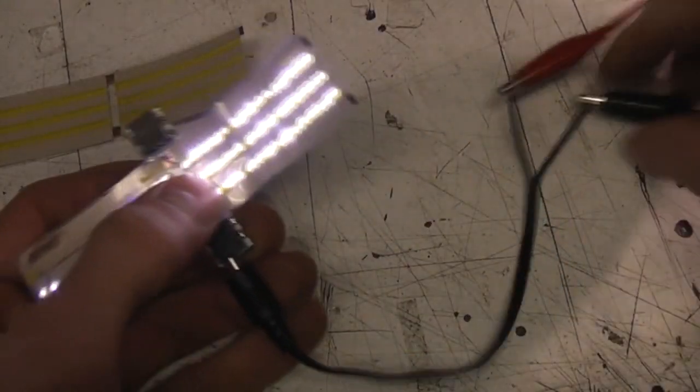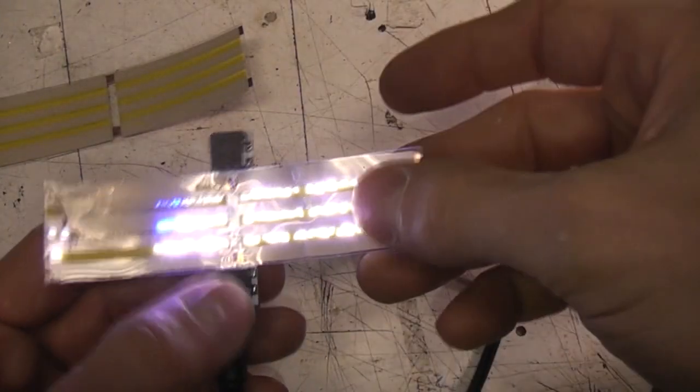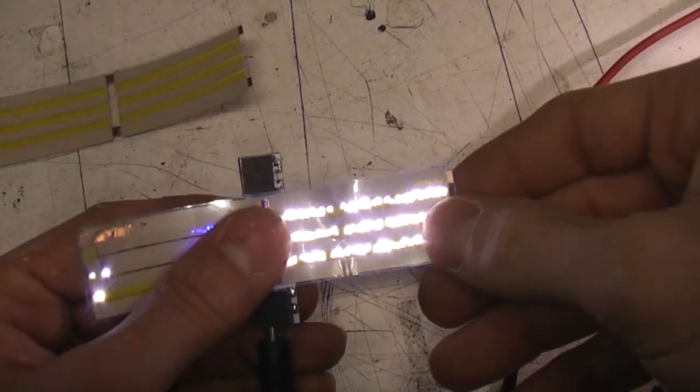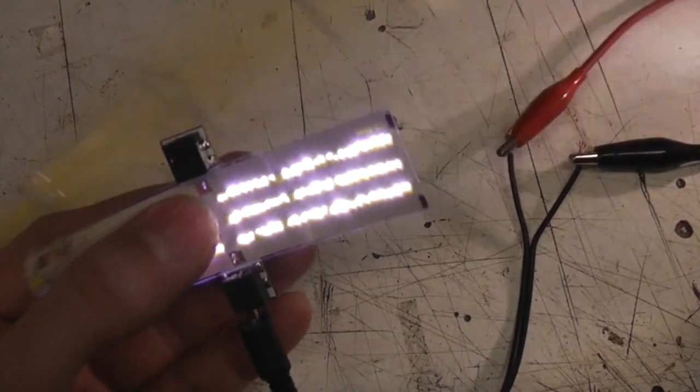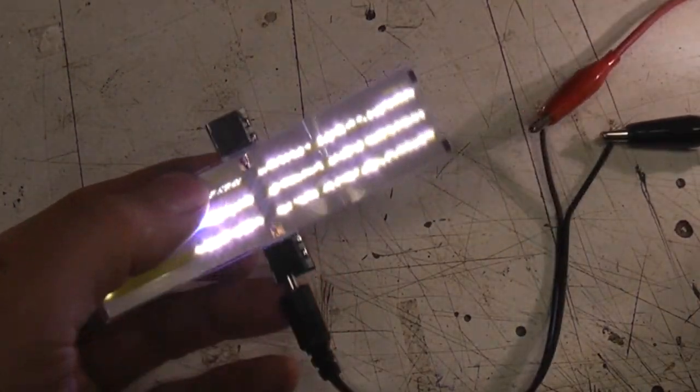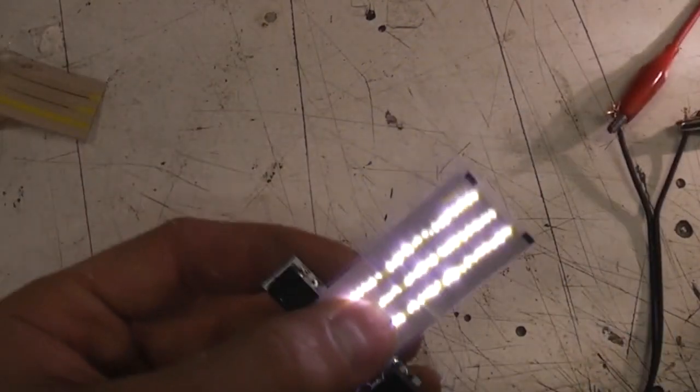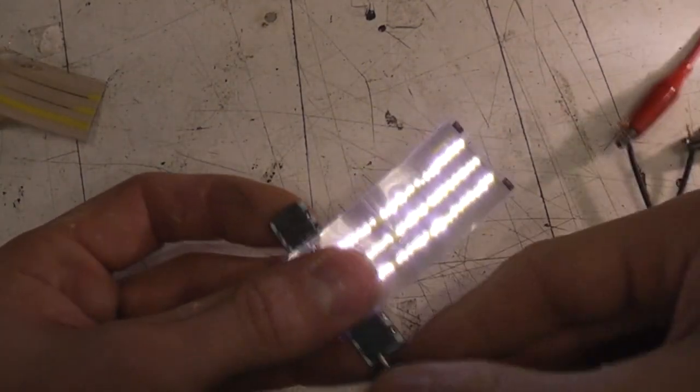This runs at a nominal 10 volts across these three strips and the current for this whole two foot strip was about 250 milliamps. So this one section is around the 20 milliamps mark.